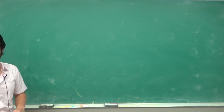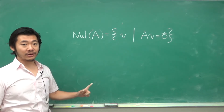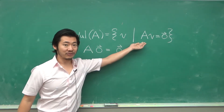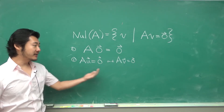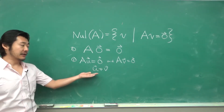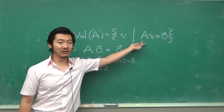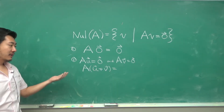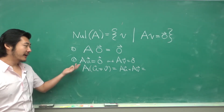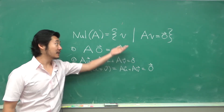Let's show that the null space is indeed a subspace. It is the set of vectors v such that A times v equals zero. First, is the zero vector in the null space? A times zero equals zero, so yes, the zero vector fits. If A times u equals zero and A times v equals zero — meaning u and v are in the null space — is u plus v in the null space? We check by multiplying by A. Since matrix multiplication is linear, A times (u plus v) equals A times u plus A times v, which is zero plus zero, which is zero. So u plus v is in the null space of A.